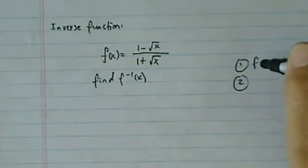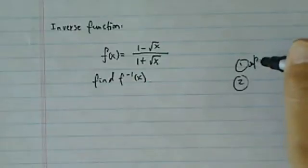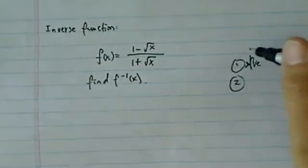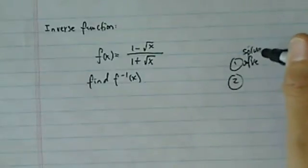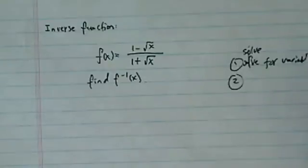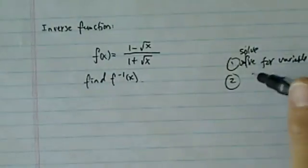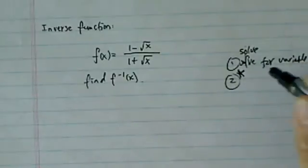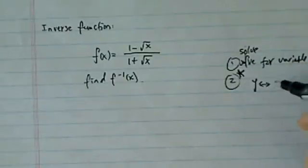Number one, we're gonna solve for our variable x. In our case, we're gonna solve for x using this one. And then the second step is a bit on the confusing side, but when we get there we'll talk about it: switch y and x. Okay, that's it.